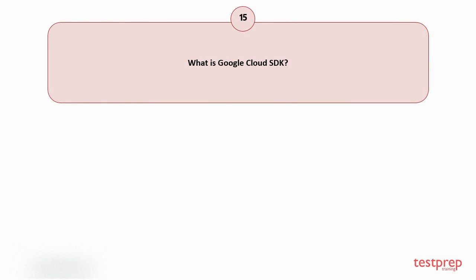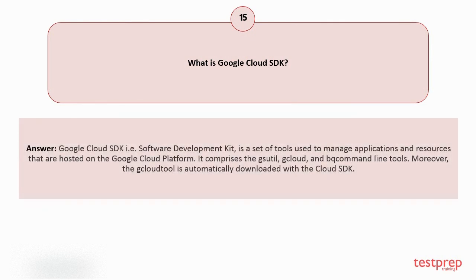Question number fifteen: What is Google Cloud SDK? Google Cloud SDK, or Software Development Kit, is a set of tools used to manage applications and resources hosted on the Google Cloud Platform. It comprises the gsutil, Cloud, and command-line tools. The Cloud tool is automatically downloaded with the Cloud SDK.